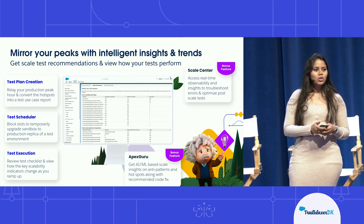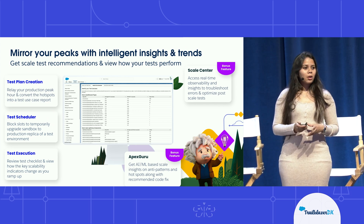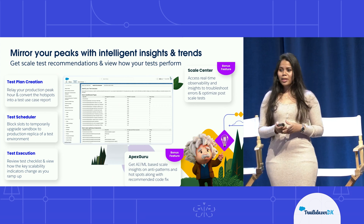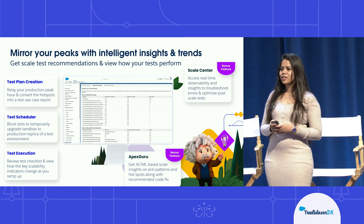The next step is to go to your full copy sandbox where you want to conduct your scale test. You can block your scale test days for the temporary enhancement. As you gear up, you can look at our test execution feature, which has a comprehensive scale test checklist to cover all your important activities and view how your key scalability indicators are behaving as you ramp up. We also have bonus features: Scale Center, which gives you real-time observability and powerful insights to troubleshoot errors and optimize your application, and Apex Guru, an AI/ML-based scale insights tool providing anti-patterns, hotspot insights, and recommended code fixes.